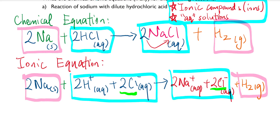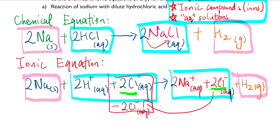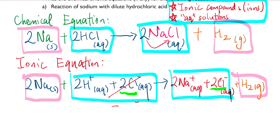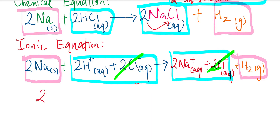If we think about it like math — moving the chloride ions from one side to the other makes them negative, so a +2Cl⁻ and a −2Cl⁻ cancel out. We tend to skip that step and directly cancel them out if they appear on both the left and right-hand sides. So I'm going to cross these out because they are the same.